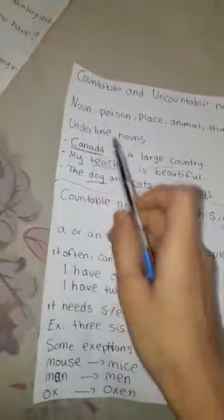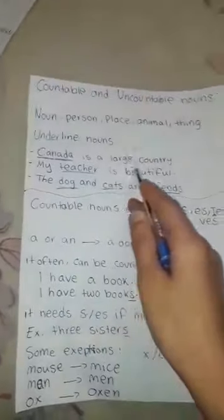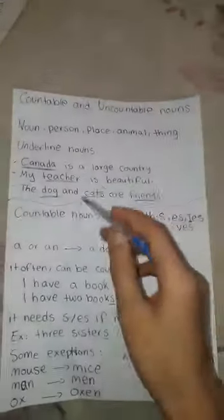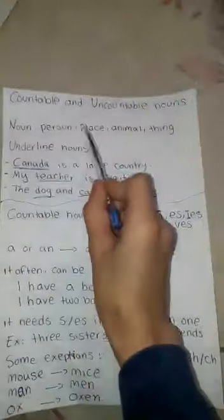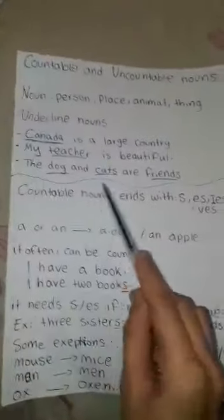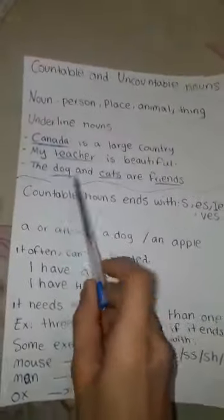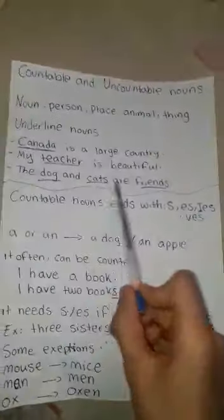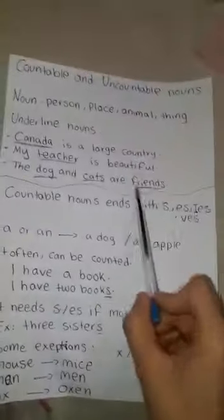Now let's underline the nouns. 'Canada is a large country.' Canada is the noun because Canada is a place. 'My teacher is beautiful.' Teacher is a noun because a teacher is a person. 'The dog and cats are friends.' Dog is a noun because dog is an animal. Cat is a noun because it's an animal. And friends is a noun because it refers to a person.